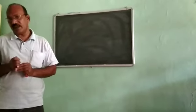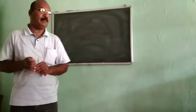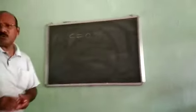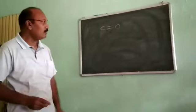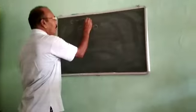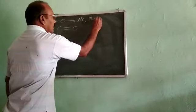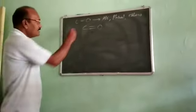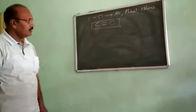When we study aldehydes and ketones, these compounds contain a carbon-oxygen double bond, which is also called a carbonyl compound or carbonyl bond. When we look at alcohols, phenols, and ethers, for aldehydes and ketones this carbonyl bond — the carbon and oxygen bond — is very important.